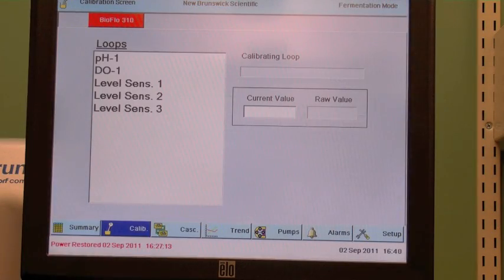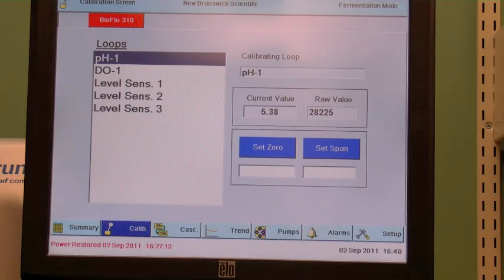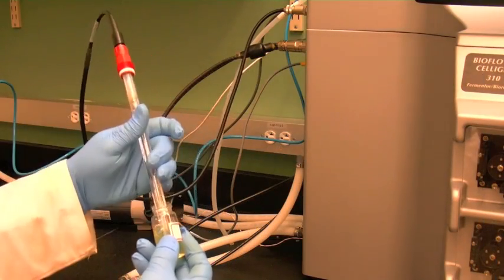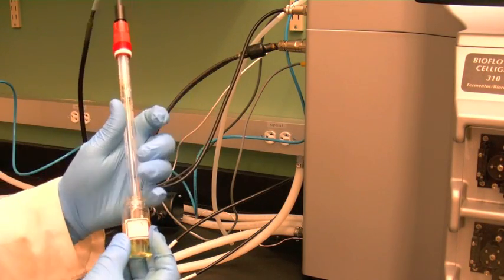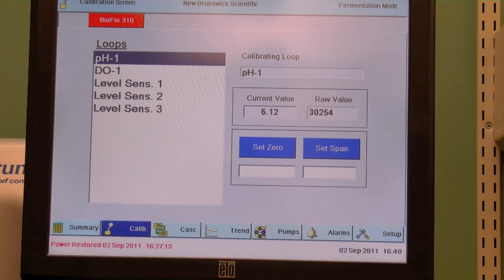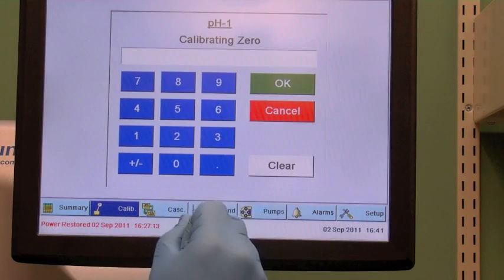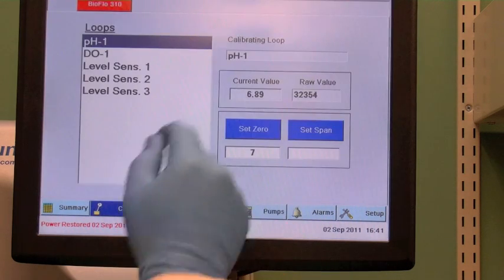On PCU, select calibrate button and then pH probe. Immerse the pH probe in 7 buffer and allow raw input signal to stabilize. Enter the value 7 in the box below set 0 button and press enter. Press set 0 button to accept value.